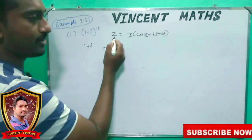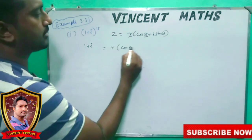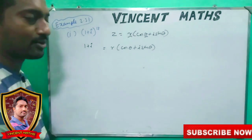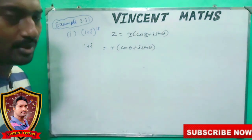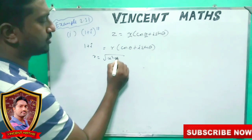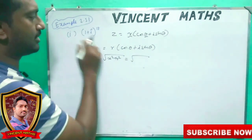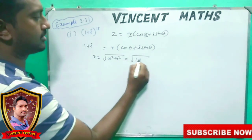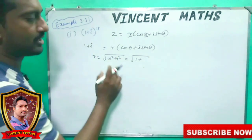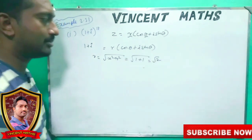Polar form: z. What is the value of R? R of x squared plus y squared. What is the value of x? 1. And y is 2. So R value is root 2.